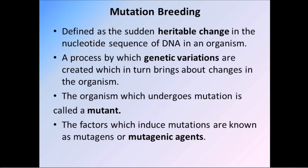Next is mutation breeding. Mutation breeding is defined as the sudden heritable change in the nucleotide sequence of DNA in an organism. For example, the coronavirus is also mutating itself, making it difficult to develop a vaccine or medicine.